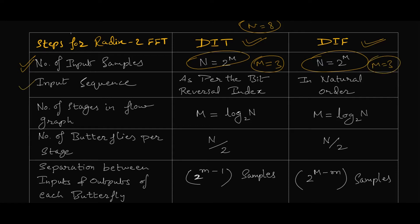In the second step you'll notice a difference. For DIT we perform bit reversal and then consider those reversed inputs — that is decimation in time. But for DIF, the order of inputs will be in normal order, or natural order. The third step is to calculate the number of stages in the flow graph.